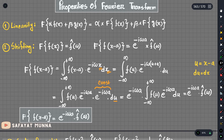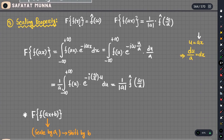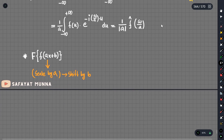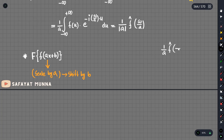The main function f(x) with the shifting property gives f-hat of omega. After scaling, the main function f(ax) gives 1 by a times f-hat of omega divided by a. After the first step shift, this becomes 1 by a times f-hat of omega by a.